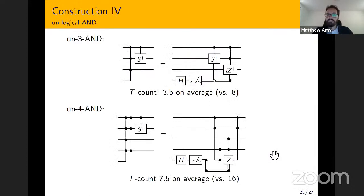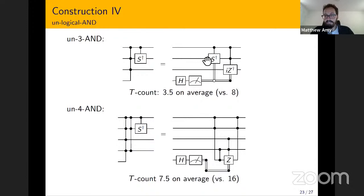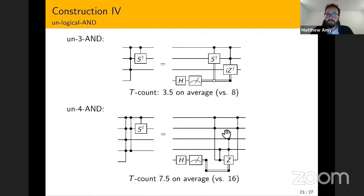In practice, you can still get some savings by doing this kind of measurement-assisted uncomputation, especially if you computed the product up to phase in the first place, because now you have this D-dagger gate that you can get some phase cancellations with the multiply-controlled Z gate. We played this game for a small number of controls and found some savings. In particular, we can uncompute a logical AND of three bits using 3.5 T gates on average, compared to 8T gates to compute the product in the first place. Similarly for four controls, you can bring the T count down to 7.5 on average, and we also have a circuit for five controls.